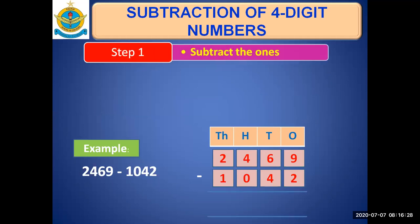First step that we need to do is subtract the ones. Always subtract the bottom number from the top number. 2 will be subtracted from 9, right? So, 9 minus 2 is 7. So, we will write this difference in ones column.